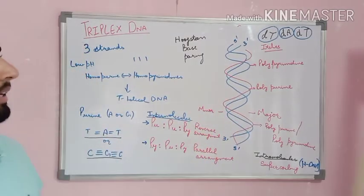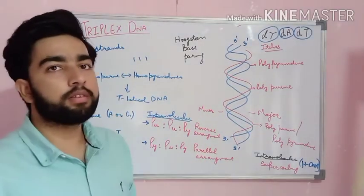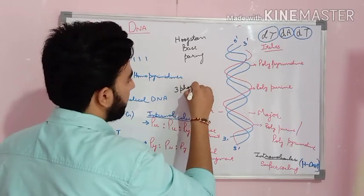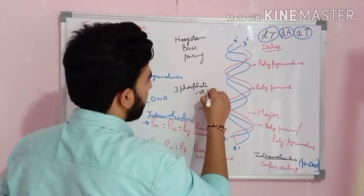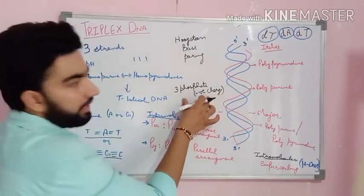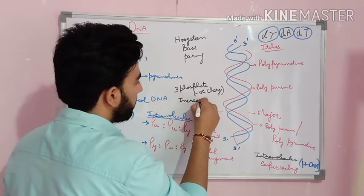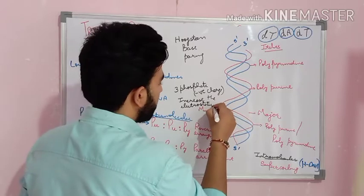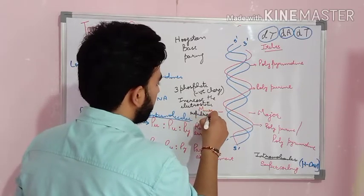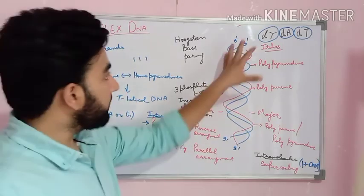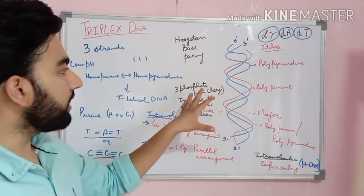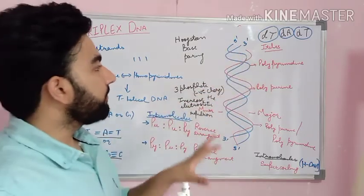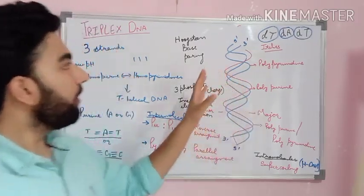Talking about the stability of the triple helical DNA — the triple helical DNA is not very stable. Why? Because it consists of three phosphate chains, and phosphate is negatively charged. This large amount of negative charge increases the electrostatic repulsion in the structure, which leads to the destabilization of the triple helical DNA.